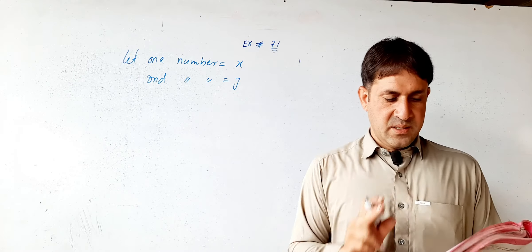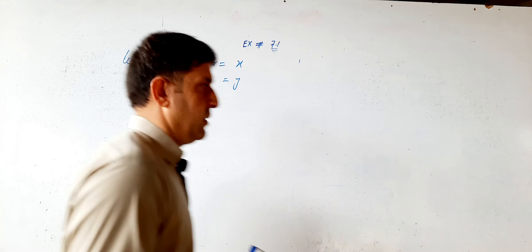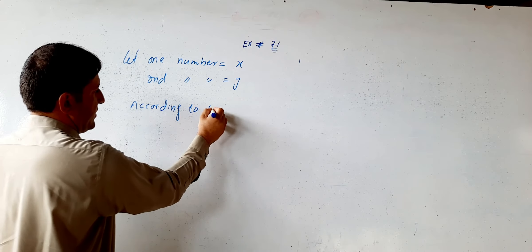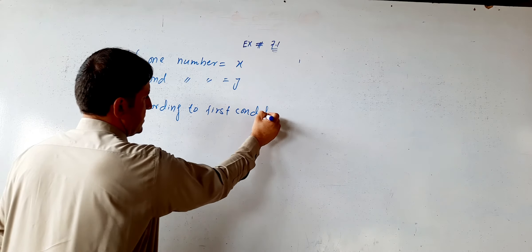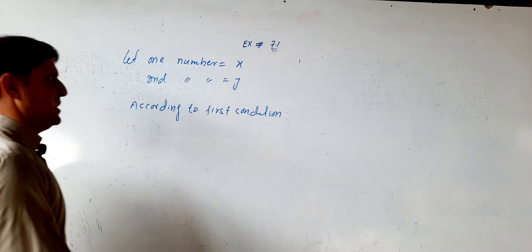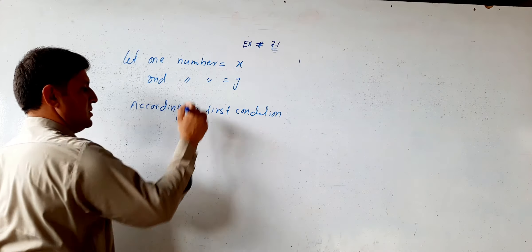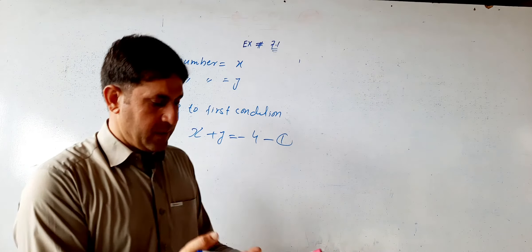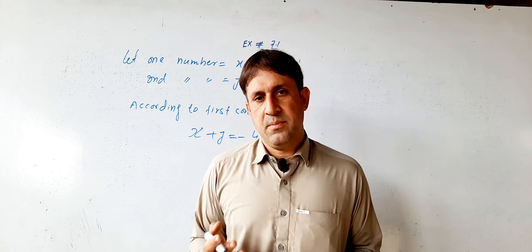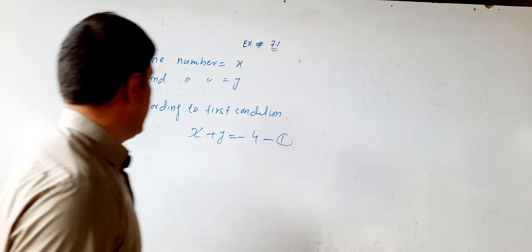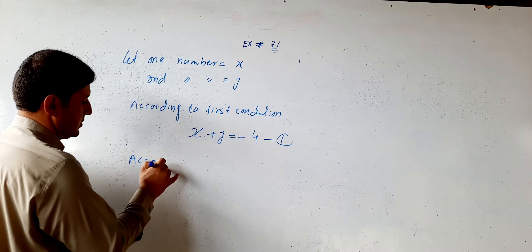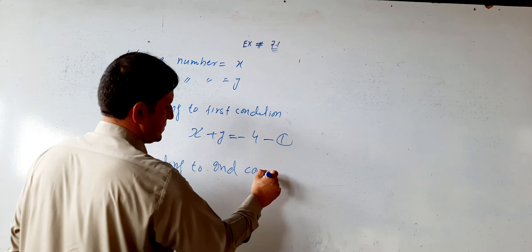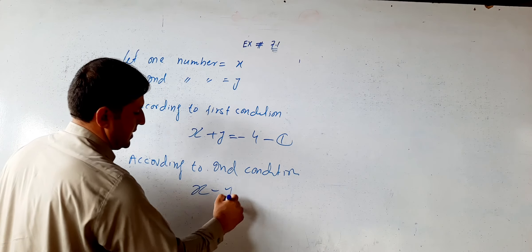Let one number be x and the second number be y. According to the first condition, the sum of the two numbers: x plus y is equal to minus four. According to the second condition, the difference: x minus y is equal to six.